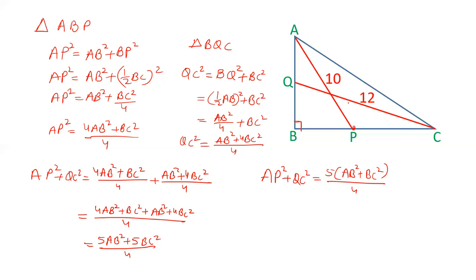In triangle ABC, the bigger triangle, AB and BC are perpendicular sides. Therefore AB square plus BC square is AC square. So here we can write 5AC square upon 4, and we have the value of AP and QC. AP is given as 10 squared, QC is given as 12 squared. 10 square is 100, 12 square is 144.